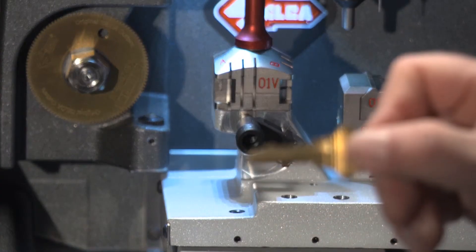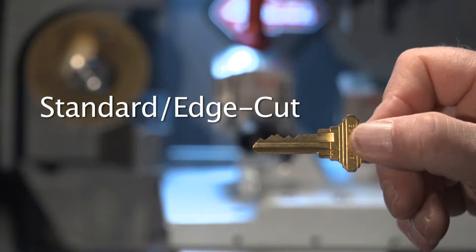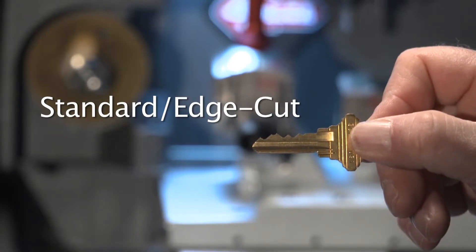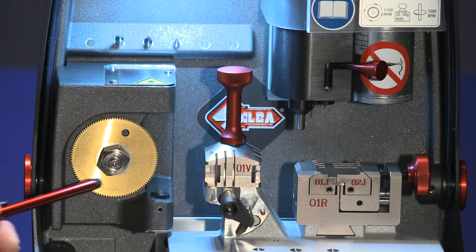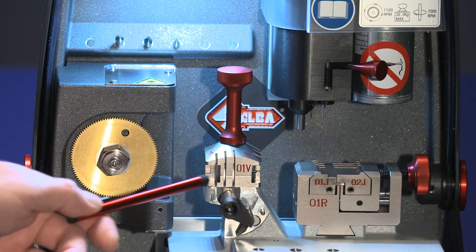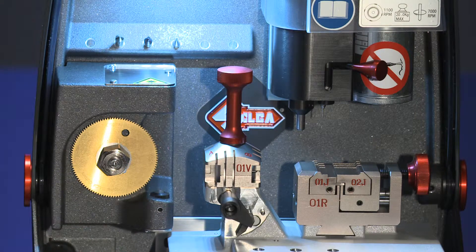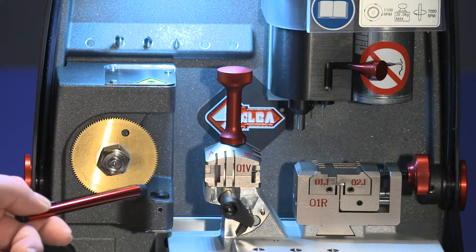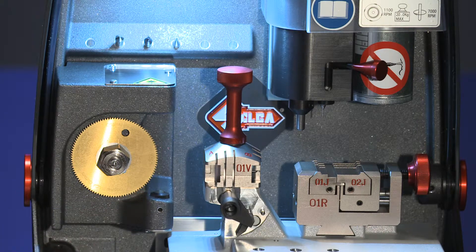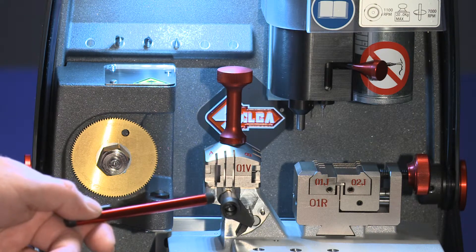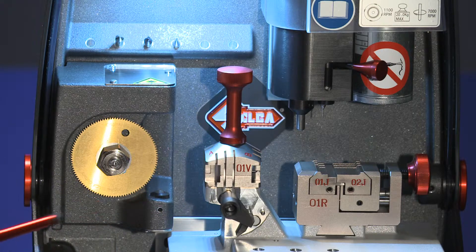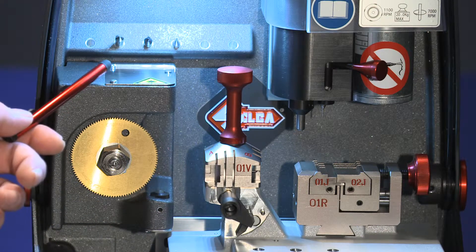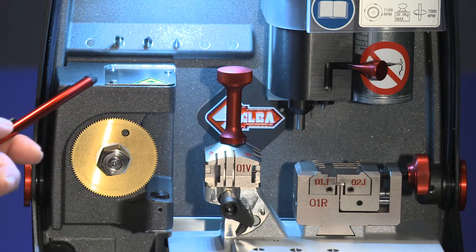The left side of the Futura is the standard edge cut side. The 01F cutter and the 01V clamp are for cutting edge cut keys. The optical laser reader is for duplicating and decoding edge cut keys. The shoulder gauge is for proper alignment of shoulder stop keys. Above the clamp is a tool holder for the tracers and cutters of laser and dimple keys.